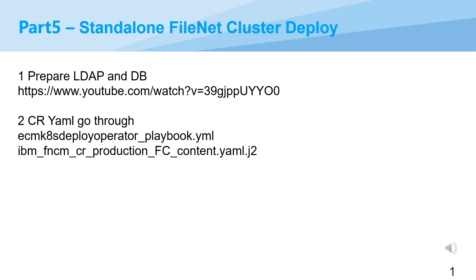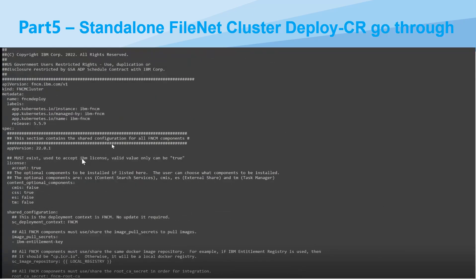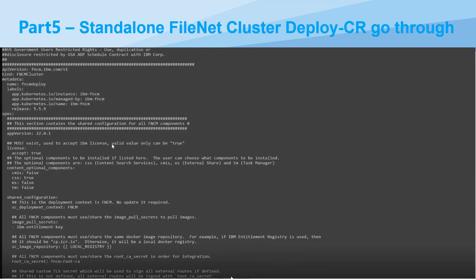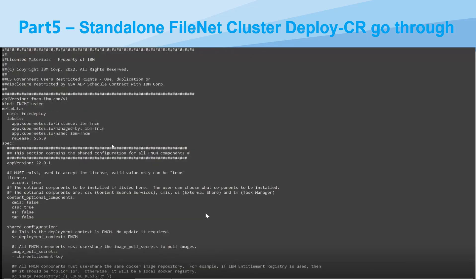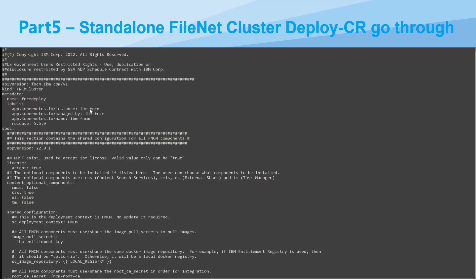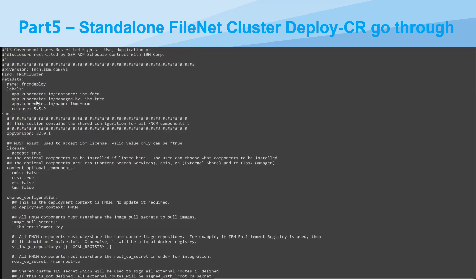Next, we will mainly go through the CR YAML. It is also from the container sample — you can see the template. The file is named IBM FNCM CR production FC content.yaml. You can see the full standalone is actually quite simple at that level.